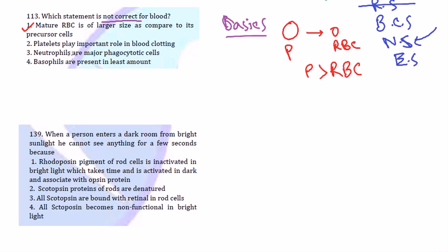But still we read the rest of the three. Platelets play important role in blood clotting - obviously they play important role, so it's correct. Neutrophils are major phagocytic cells - neutrophils are a part of phagocytic cells, so they are good. Basophils are present in least amount - that's also true statement. So option one is wrong here, so we can exclude option one. So option one is going to be the correct answer for this. This is a question I always term as knowledge base question or we can say knowledge memorizing type of question.